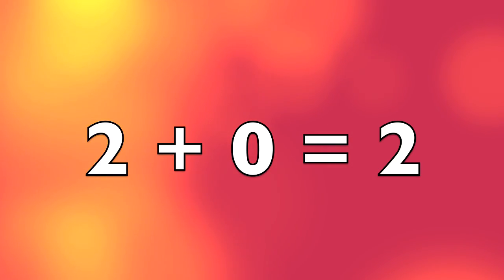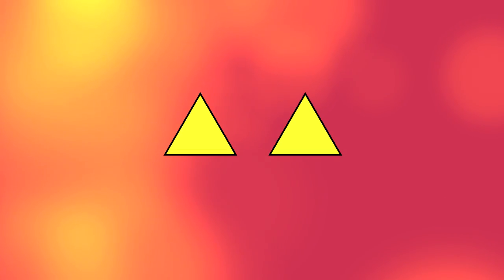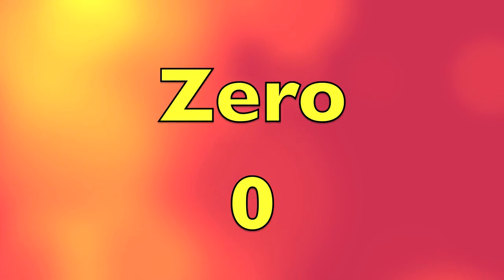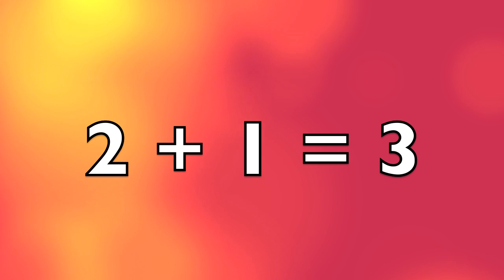2 plus 0 equals 2. 2 triangles plus 0 equals 2 triangles.